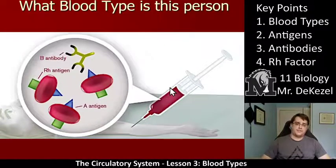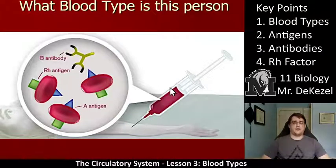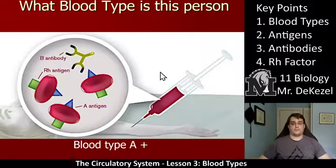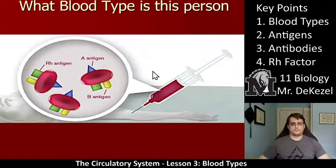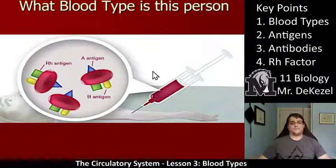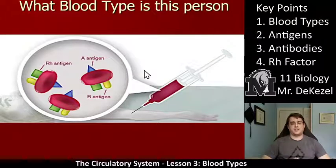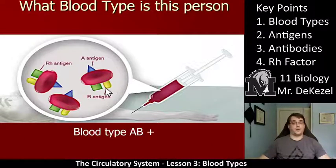For the next one, the first step is to look at the red blood cell. We have an A antigen — that is the triangle — and we have the RH antigen, so that means we have A positive. The opposite is floating around in the plasma. This should be A positive — awesome. For the following one, these erythrocytes have three antigens on them: the A antigen in blue, the B antigen in yellow, and the RH antigen in green. There's nothing in the plasma, which means this is blood type AB positive.